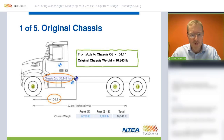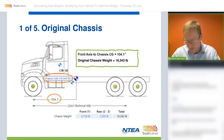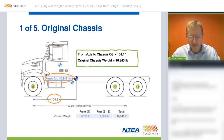For the original chassis, we need to take note of the chassis weight, which in this case is 16,343 pounds, and the center of gravity of the chassis from the front axle, at 104.1 inches.